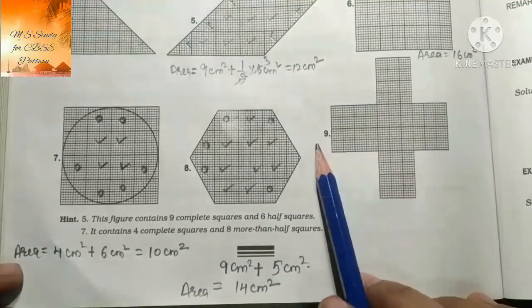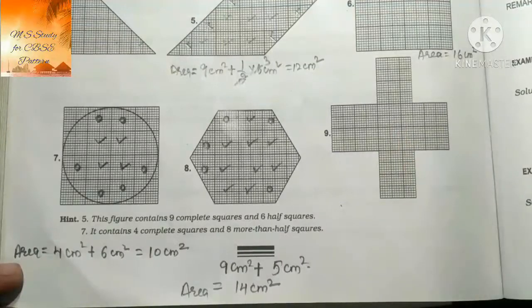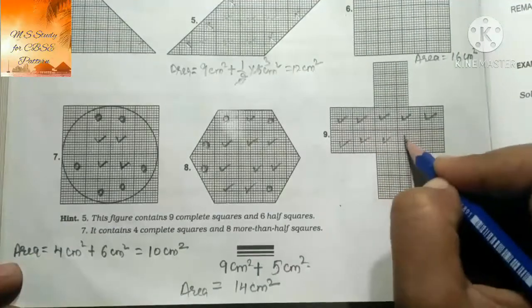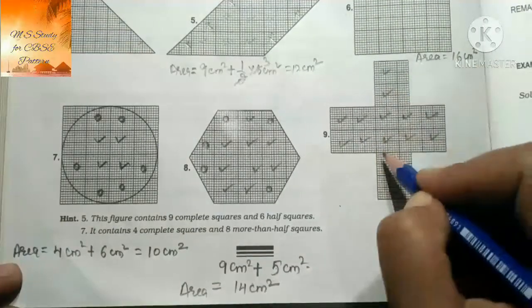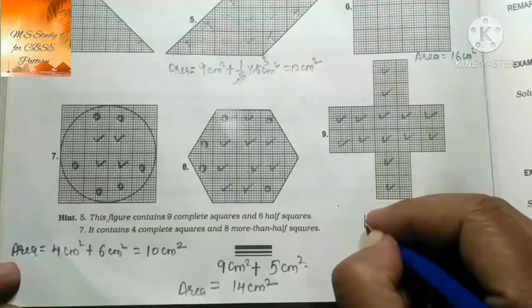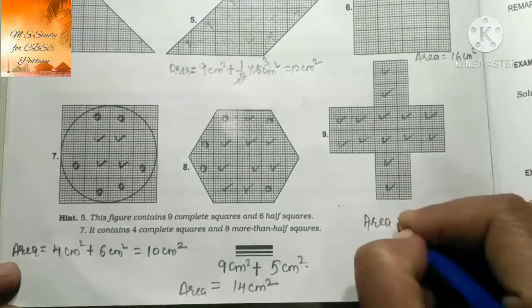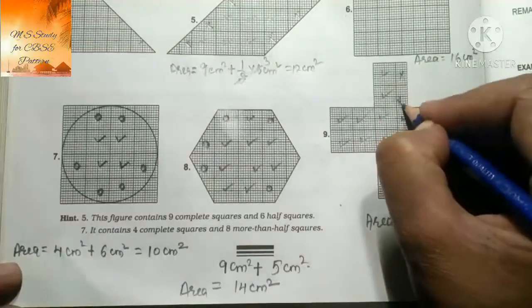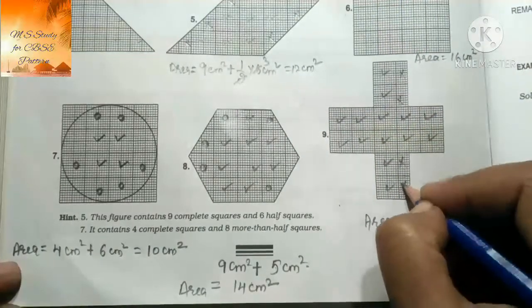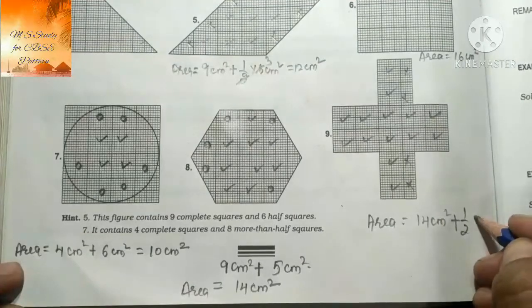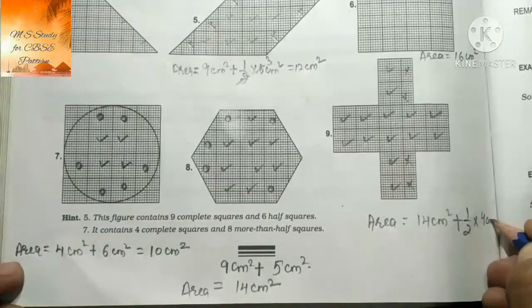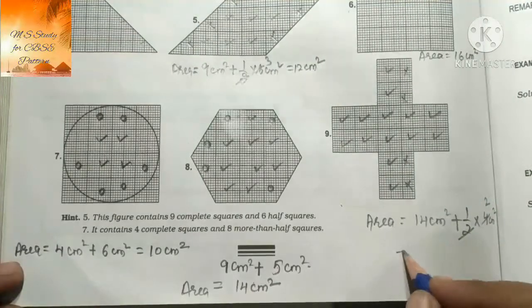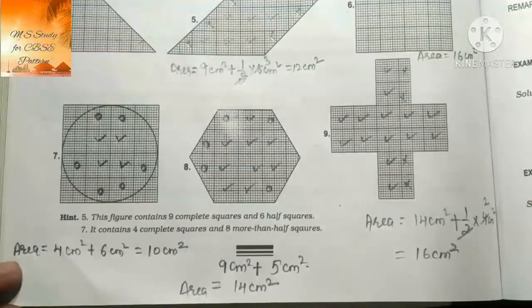9 वाले पर - full वालों को count कर लेते हैं, 14 complete squares। Area equals to 14 cm² plus half वालों को - 4 half squares। Half into 4 = 2। यानि कि 14 + 2 = 16 cm²।